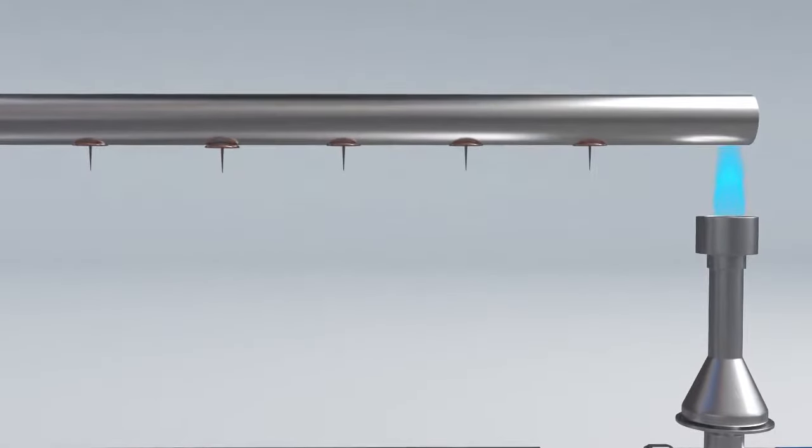Now light a Bunsen burner and heat one end of the rod. We observe as the rod gets heated, the wax starts melting and the thumbtacks begin to fall off.